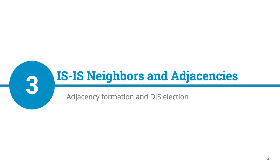In this lesson, we'll be reviewing the ISIS neighbor adjacency formation and designated intermediate system election processes. Just like OSPF, ISIS has rules and a process to follow to form neighbor relationships.